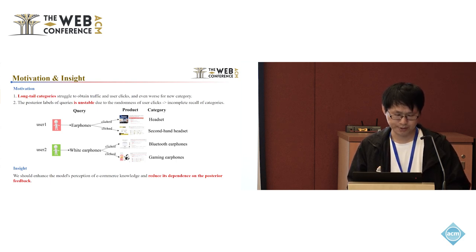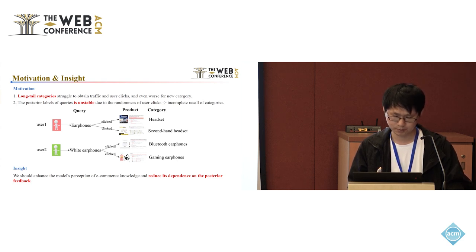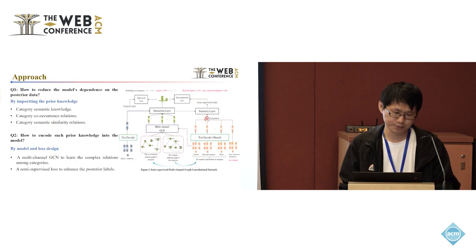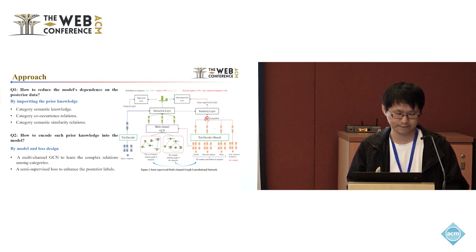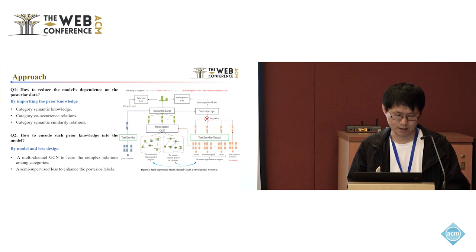To address these problems, we should enhance the model's perception of e-commerce knowledge and reduce its dependency on posterior feedback. There are two key challenges to solve. The first is how to reduce the model's dependency on posterior data by importing prior knowledge of categories, such as category semantic knowledge, co-occurrence, and semantic similarity relations. The second is how to encode this prior knowledge into the model. We design a new model structure and loss, proposing a multi-channel design to learn complex relations and a semi-supervised loss to enhance posterior labels.